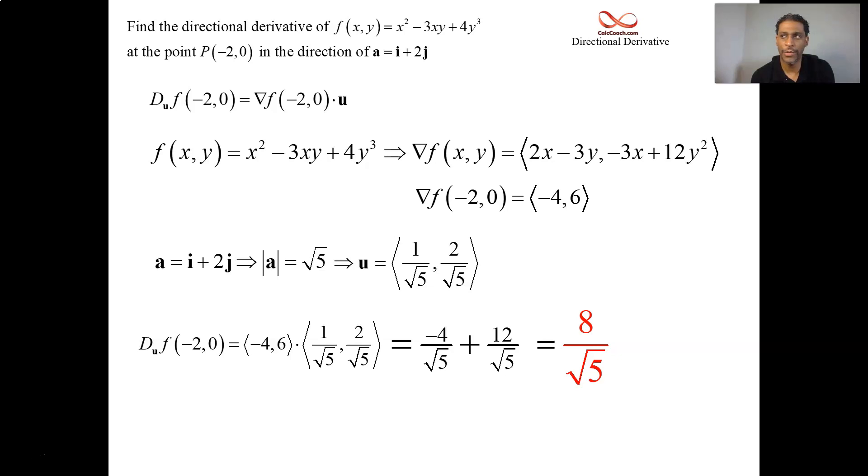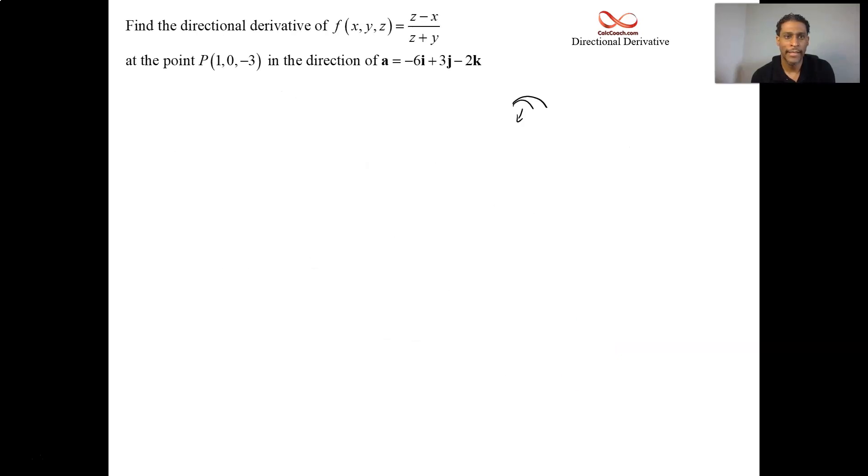Now, let's do a more difficult one. We have this function z minus x on top of z plus y. Let's go to three dimensions. So this represents a four-dimensional function. Nothing we can visualize. We have a point. We have a direction. Function, point, direction. We can calculate the derivative, the directional derivative of our function at our point in that direction. It's just the dot product between the gradient and the unit vector. So now we have the function and we have to take the x and the y and now the z partial of this function.